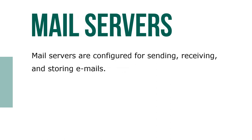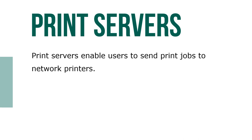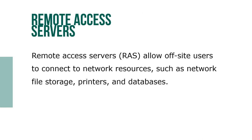Mail servers are configured for sending, receiving, and storing emails. Print servers enable users to send print jobs to network printers. Remote access servers allow off-site users to connect to network resources such as network file storage, printers, and databases.